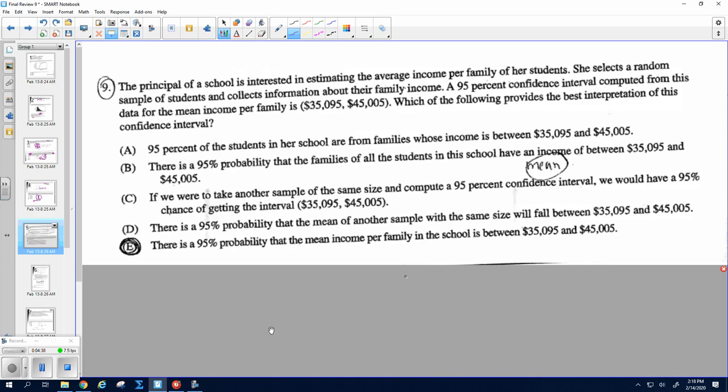Alright, number nine. Best interpretation of this confidence interval. So A says 95% of the students in our school are from families whose income is in between this and this. So the 95% is the capture rate of the true mean, not the percentage who are in between. So my true mean is somewhere in between here. It could be closer to here or closer to here. We don't know where, but we capture it 95% of the time based on our confidence interval.